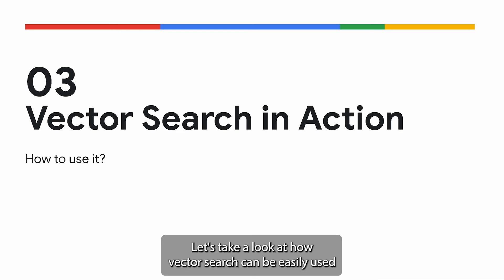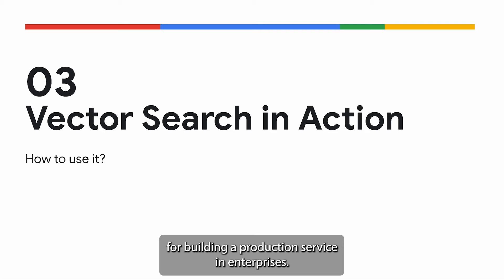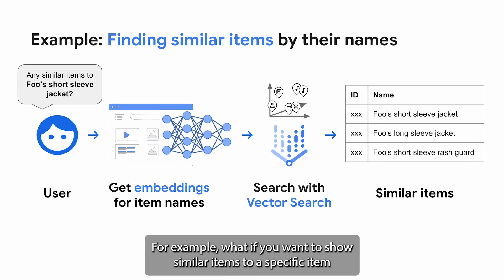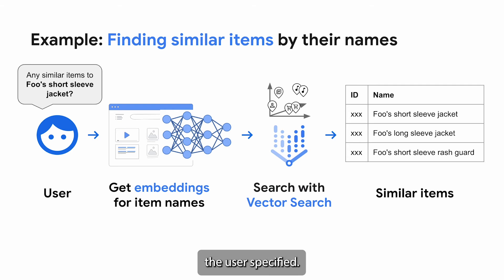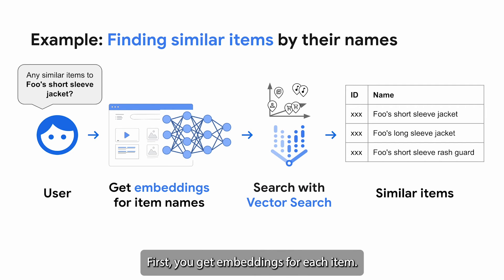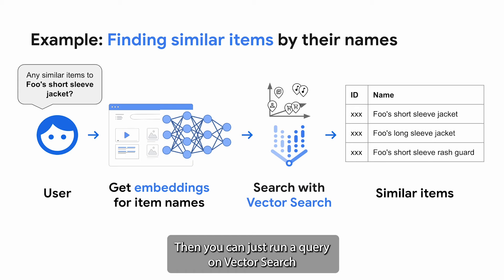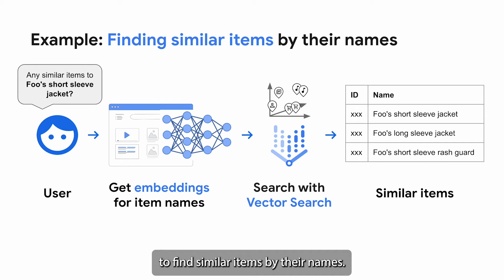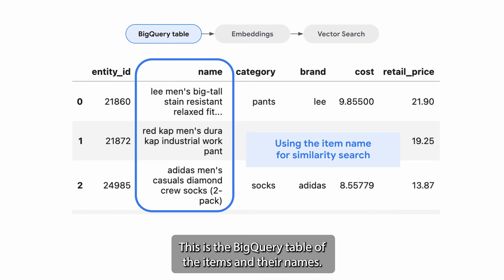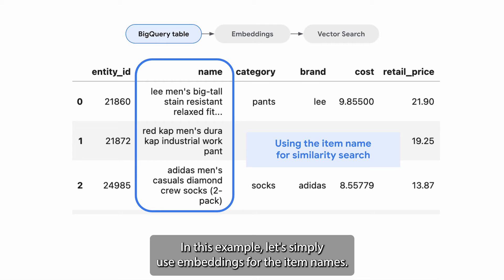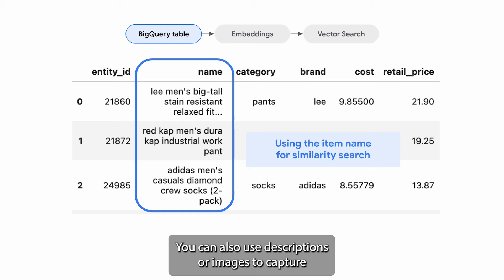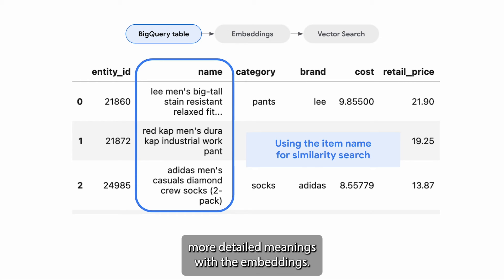Let's take a look at how vector search can be easily used for building a production service in enterprises. For example, what if you want to show similar items to a specific item the user specified? First, you get embeddings for each item. Second, build an index on vector search with the embeddings. Then you can just run a query on vector search to find similar items by their names. This is the BigQuery table of the items and their names. In this example, let's simply use embeddings for the item names — you can also use descriptions or images to capture more detailed meanings with the embeddings.